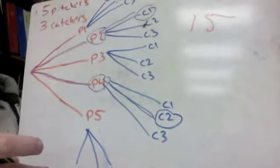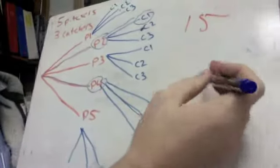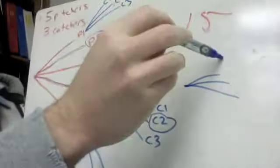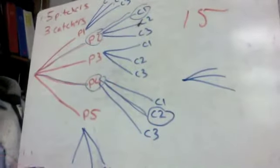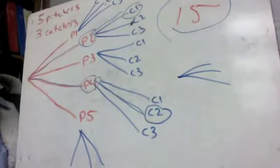You could have had this diagram the other way too. You could have had the catchers first, which would have been like 3 lines. And then you could have had 5 pitchers. Either way, it still would have been 15 outcomes no matter what.